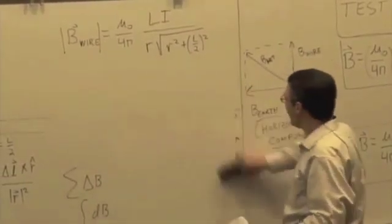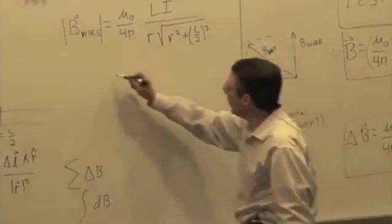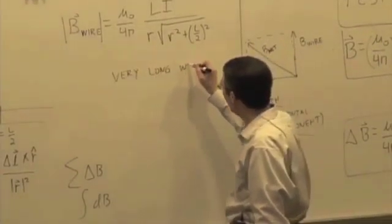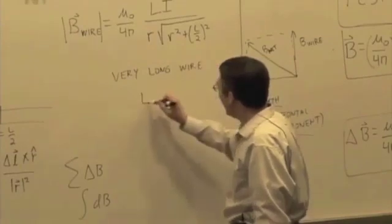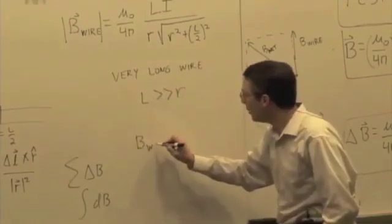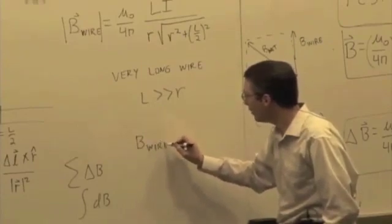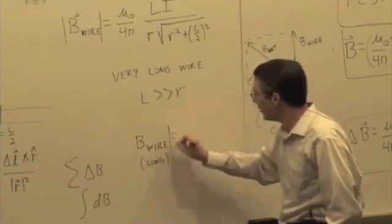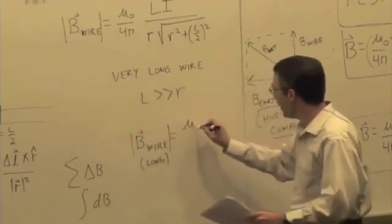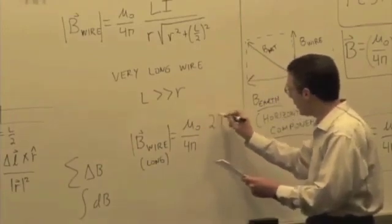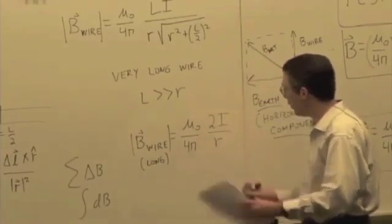One approximation that's useful is when you have a very long wire, L is much bigger than R. If you simplify it, you'll find that the magnetic field of the wire, long wire, is equal to mu naught over 4 pi, 2 I over R.